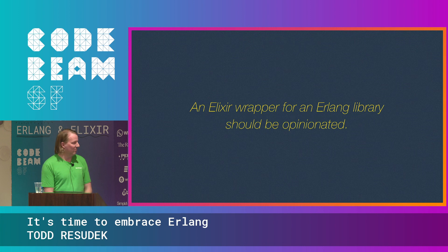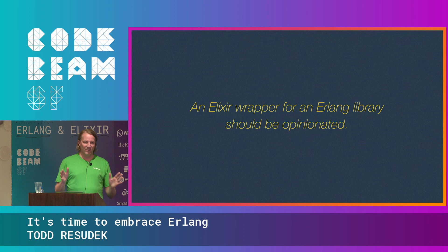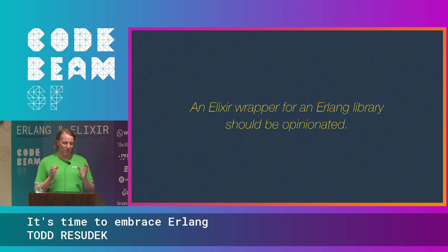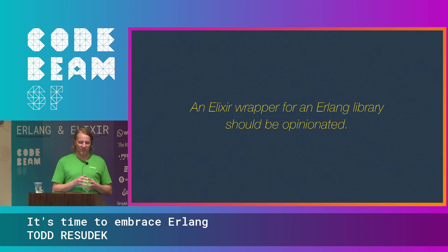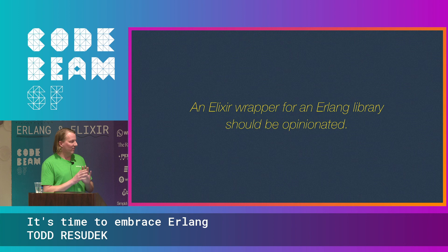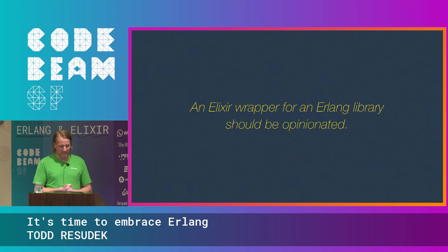In my opinion, an Elixir wrapper for an Erlang library should be opinionated. I think it's totally fine to wrap an Erlang API in an Elixir API if it's opinionated — for example, if you want to use ETS in a very specific, prescriptive way and form strong opinions in your library, that's a very valid reason to do this. But if all you're doing is changing errors to error tuples or flipping the arguments, I would question the value that gives to our community.